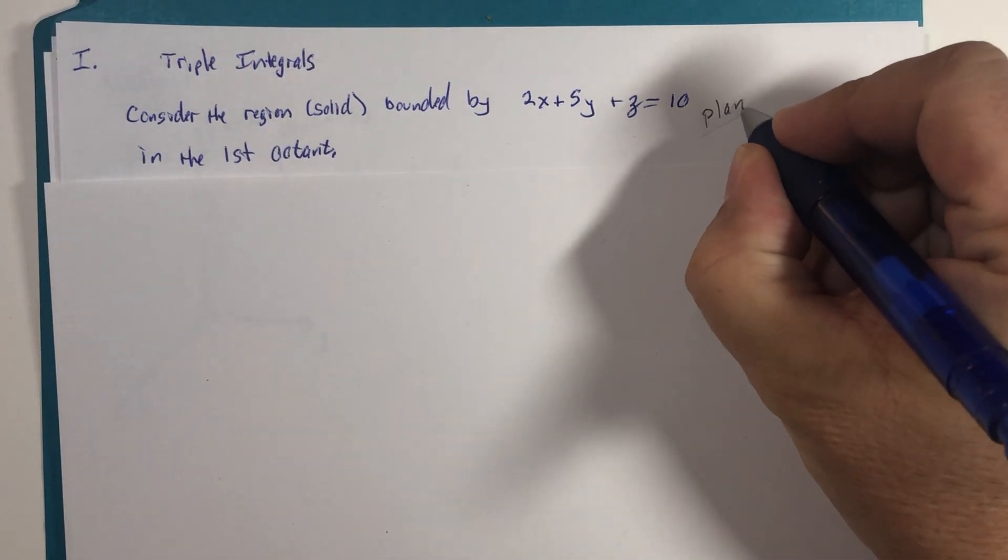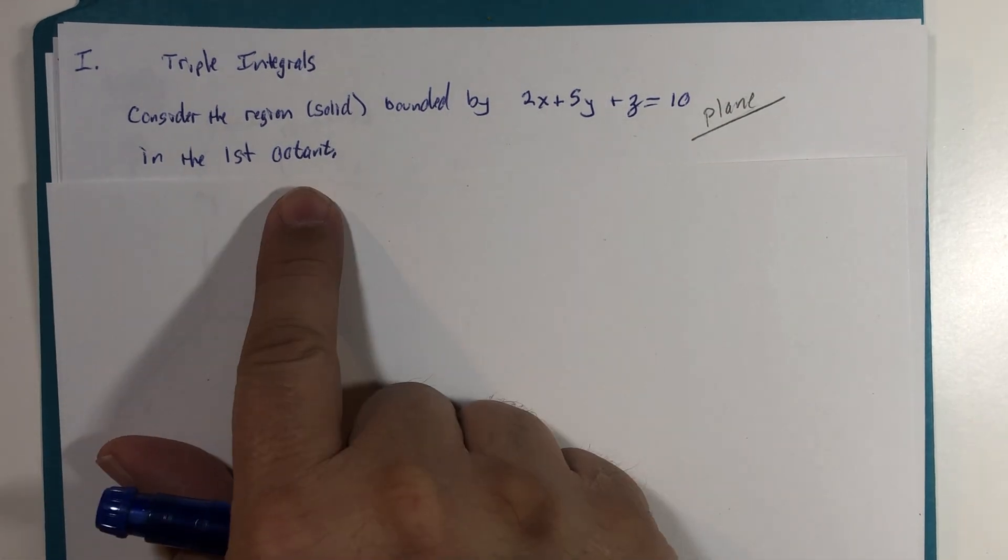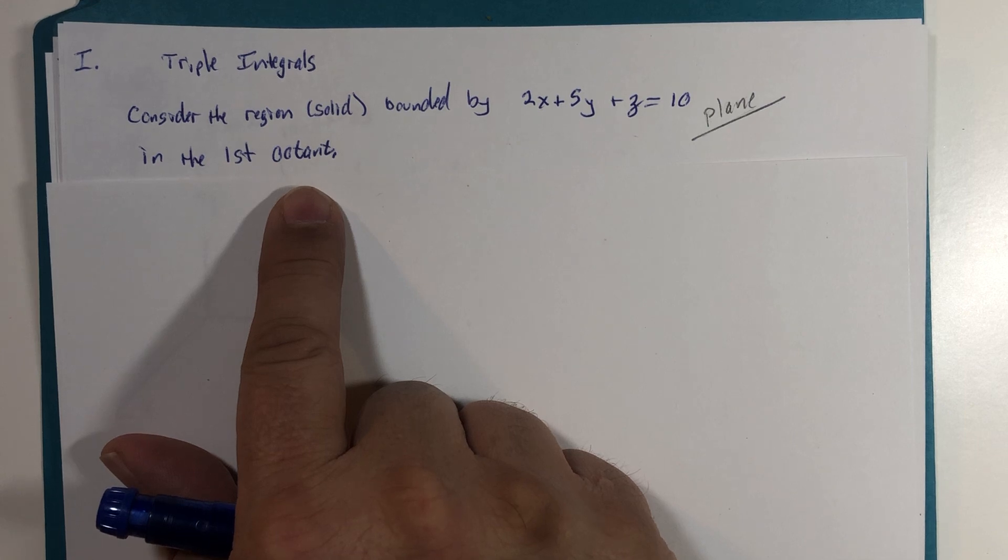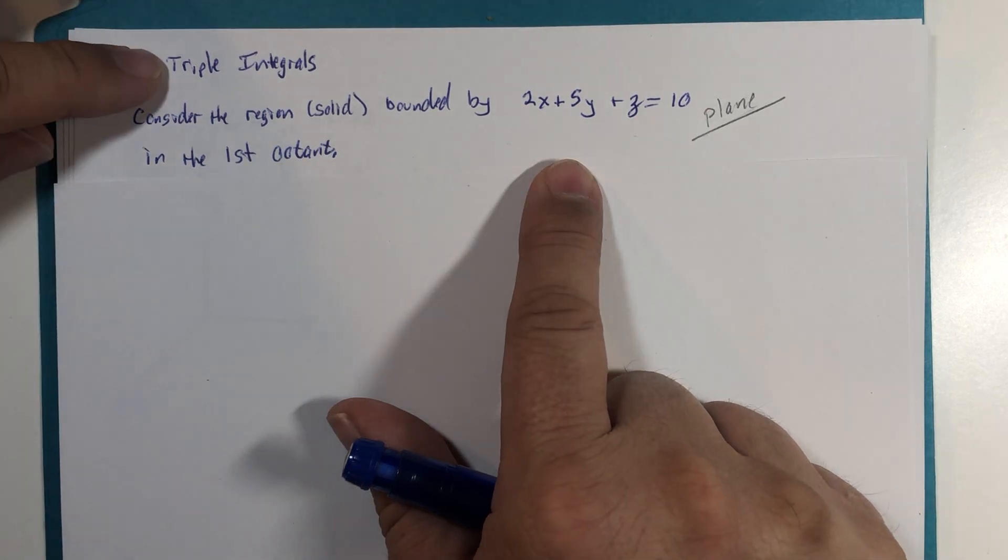This happens to be a plane in the first octant. So in the first octant where x, y, and z are all positive. And this plane will be the other boundary in that first octant.